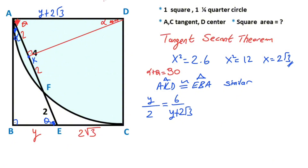After cross multiplication, the equation becomes: y squared plus two y root three equals 12.